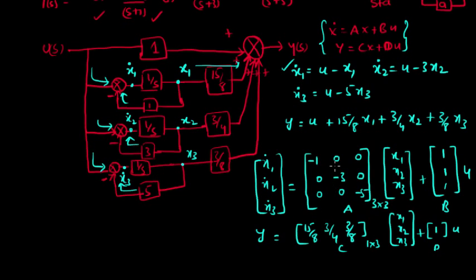This is also called the diagonal canonical form because the system matrix A is diagonal. The diagonal entries are the roots of the denominator polynomial, which are also the poles of the system: −1, −3, and −5.